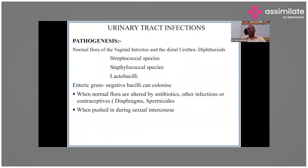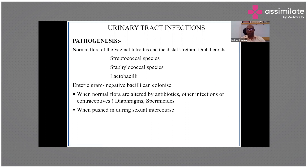Why do people get urinary tract infections? What is the pathogenesis and what does the body do to prevent these infections? Normally, the normal flora of the urethra in males and the vagina in females includes lactobacilli, streptococcal species, and staphylococcal species. These protect the urinary tract from gram-negative bacilli by colonizing and not allowing other bacteria to take over. But when you give antibiotics, or there are other infections, or contraceptives such as spermicidal jellies or barrier methods are used, the normal flora is altered.